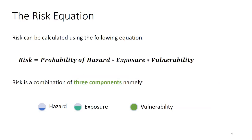When we look at risk and explain the different types of risk, sometimes we want to try to measure risk from its different components. The three components we look at when we talk about risk are: the hazard, the probability of the hazard happening, the exposure, and vulnerability. The risk equation can be written as: Risk = Probability of Hazard × Exposure × Vulnerability.